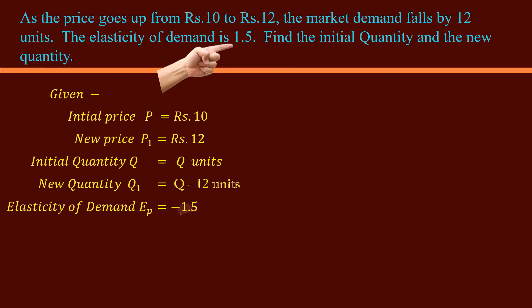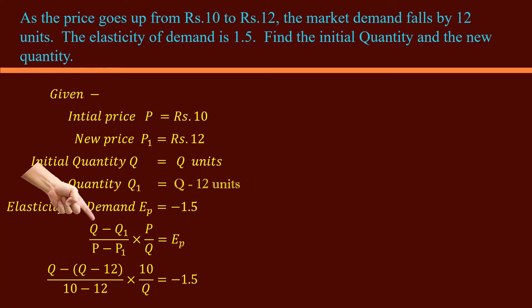We have to find initial quantity Q and new quantity Q1. So we have to interchange the sides of the formula. The unknowns are on the left hand side now. Substitute the given values in the formula. Q minus, within bracket, Q minus 12. Don't forget to put the value Q minus 12 inside the brackets. 10 minus 12, 10 by Q equal to negative 1.5.